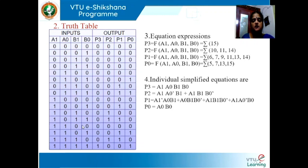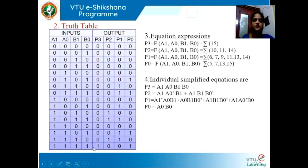Step number 3 is to derive and write the equations. We write them in the form of sum of products. P3 is high when A1, A0, B1, and B0 are all high; otherwise P3 is 0, as can be seen from the truth table.